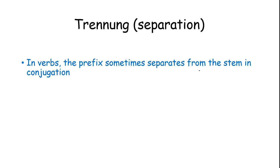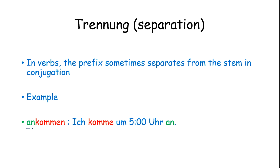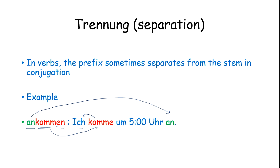In verbs, the prefix sometimes separates from the stem in conjugation. While conjugating, we change the prefix while making a sentence. Let's see the example. With 'ankommen', when making a sentence, the prefix part will always go at the end of the sentence, and the verb stem will conjugate as per the subject and will take the second position.